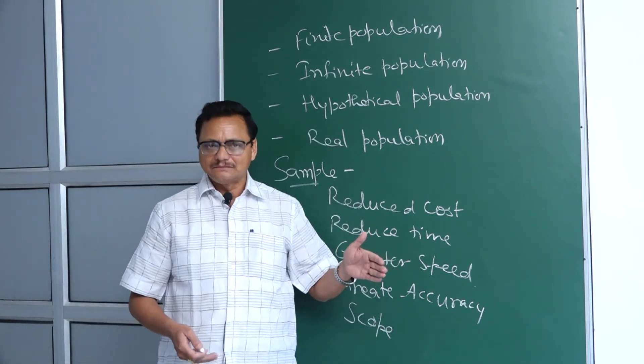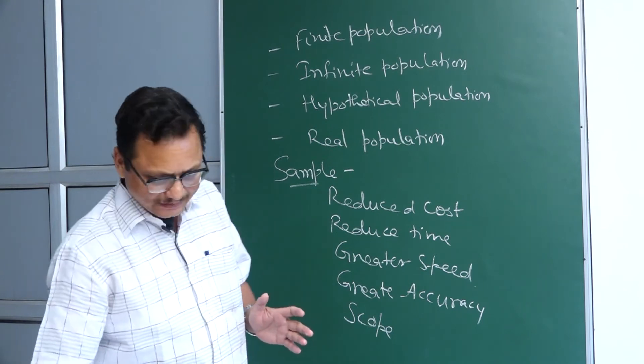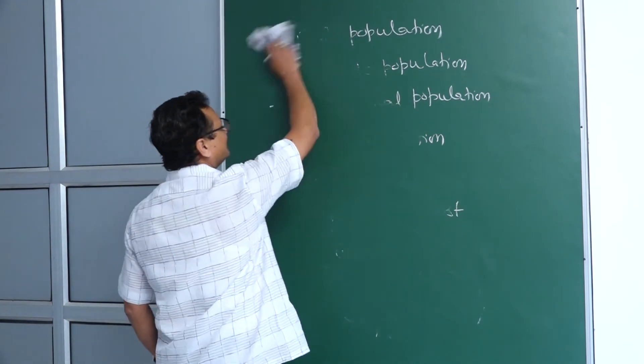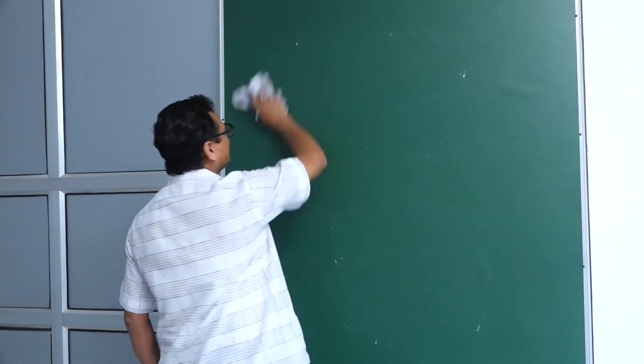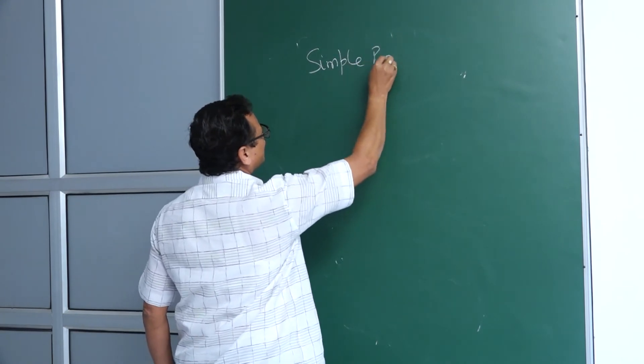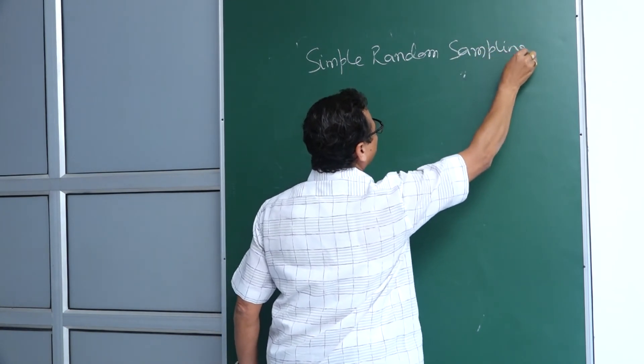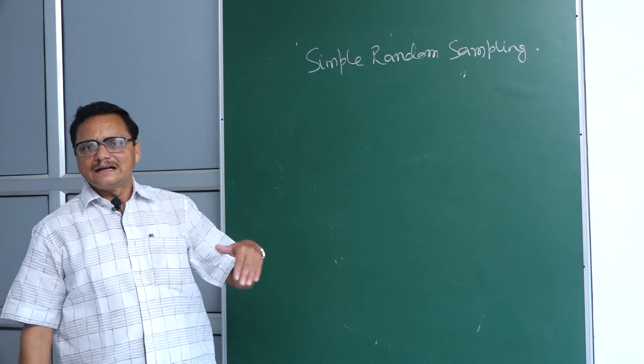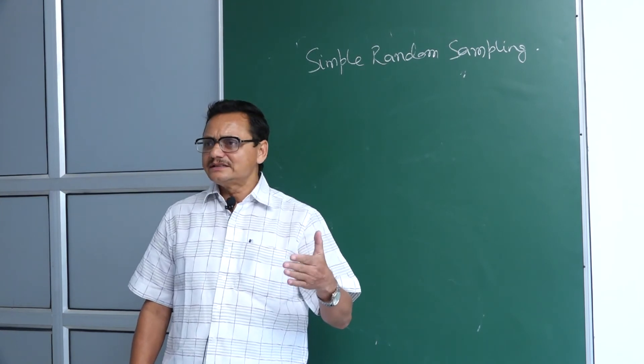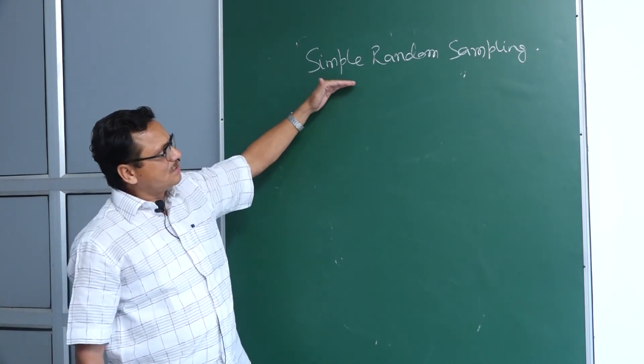In sampling, when we study more deeply, first is simple random sampling. A sampling procedure is called simple random sampling if all the possible samples of a given size have equal chances of being selected.